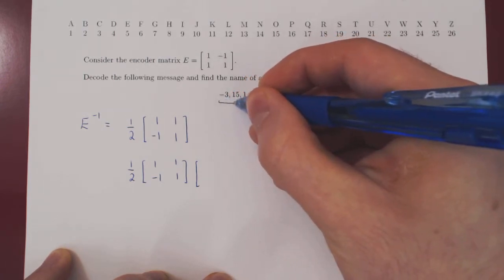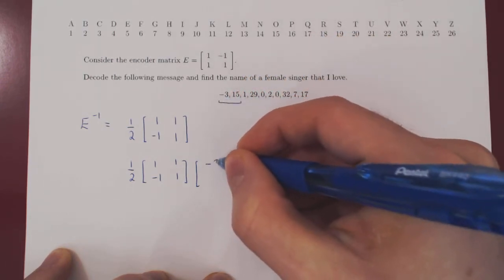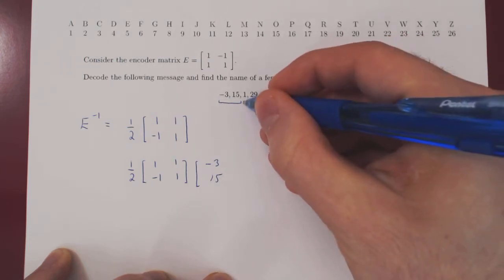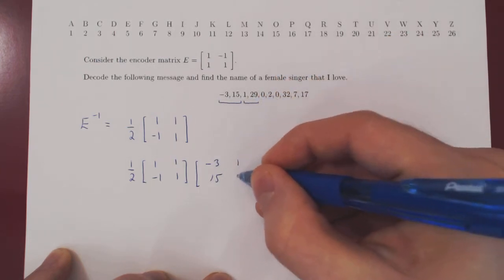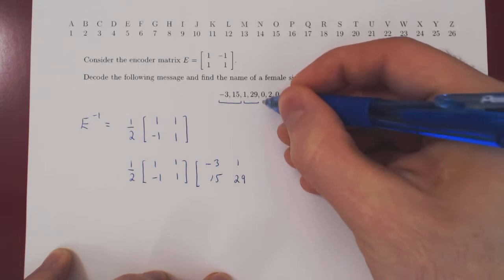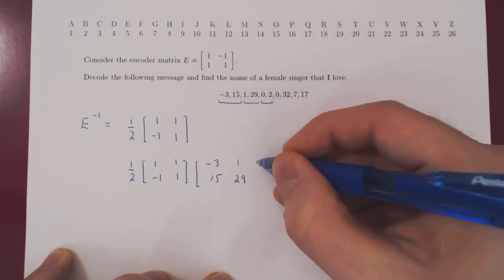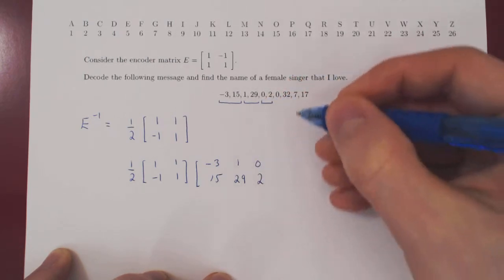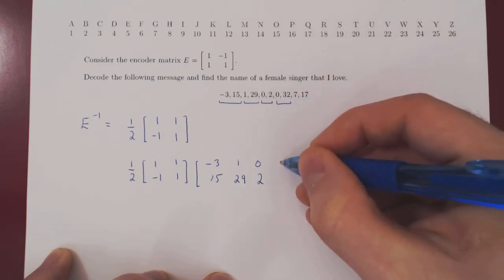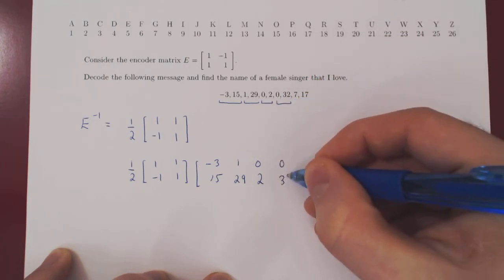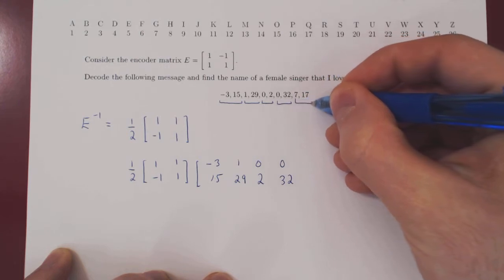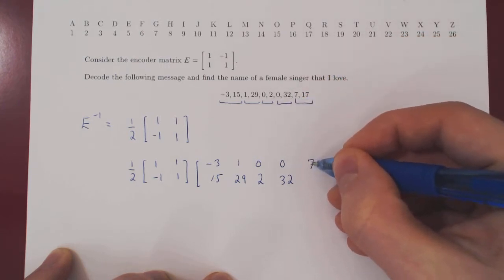So first, negative 3, 15. Second column, 1, 29. Third column, 0, 2. Fourth column, 0, 32. Fifth column, 7 and 17.